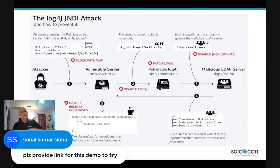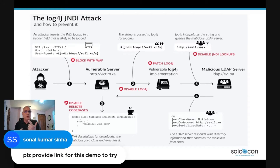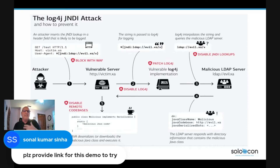In short: if the attacker passes in a malicious string through a common web application parameter, and your Java application logs that string or passes it to a Java library that logs the string, and your Log4j instance interprets that malicious string and executes a remote request — say, to a JNDI server — then your application is dangerously compromised.